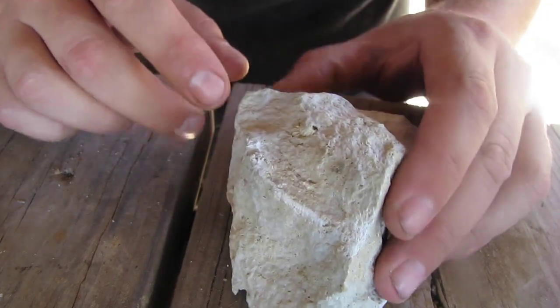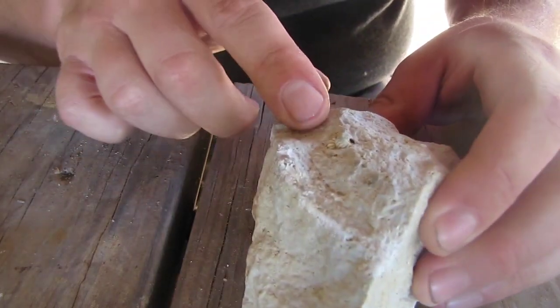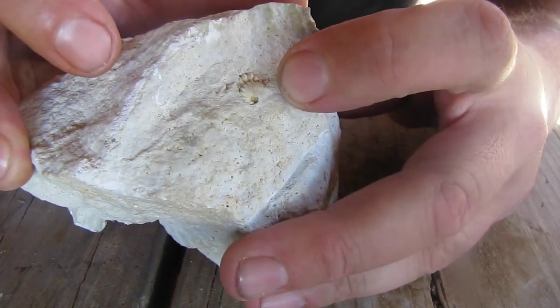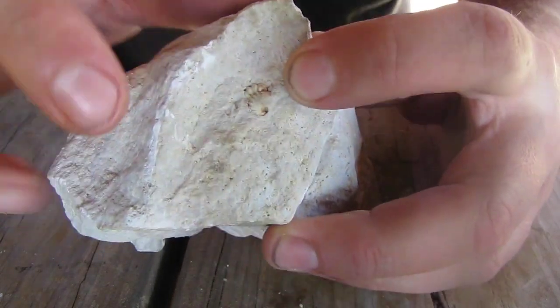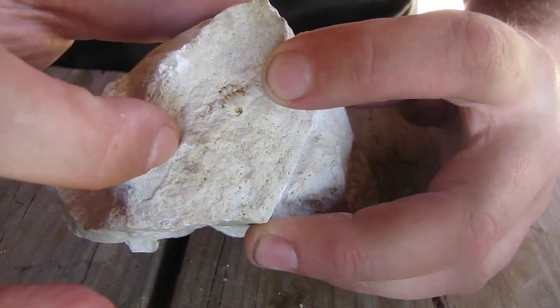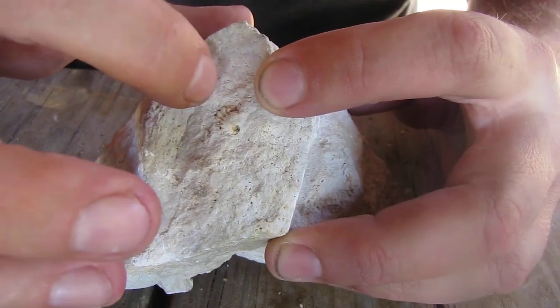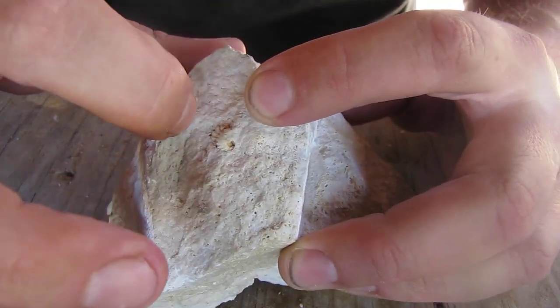Okay, first things first, we want to look at which way our trilobite is running. So you can see right there that's its head, which means its body is running back this way. So my first hits I'm going to want to make right along this line.